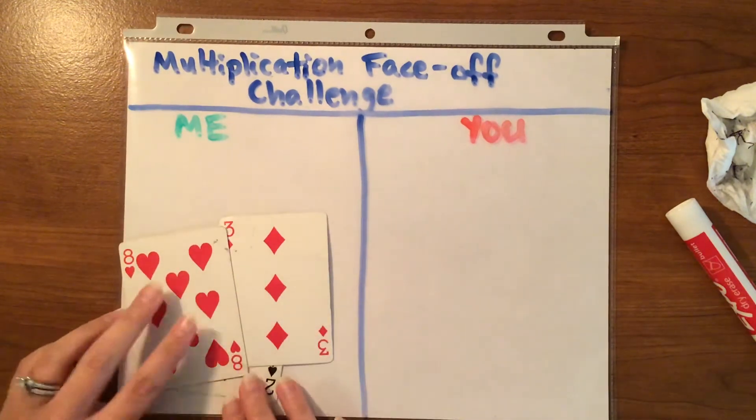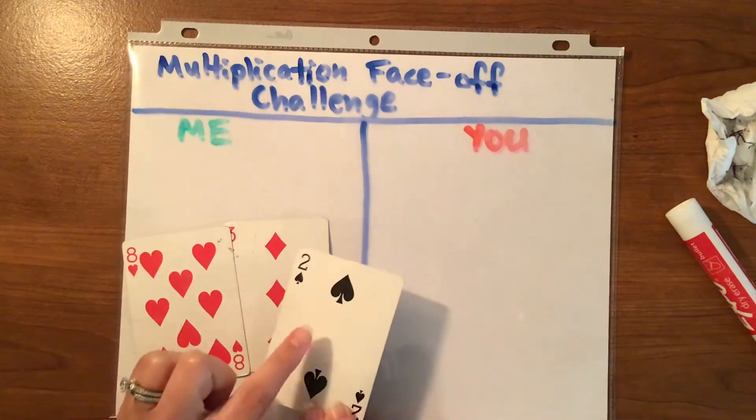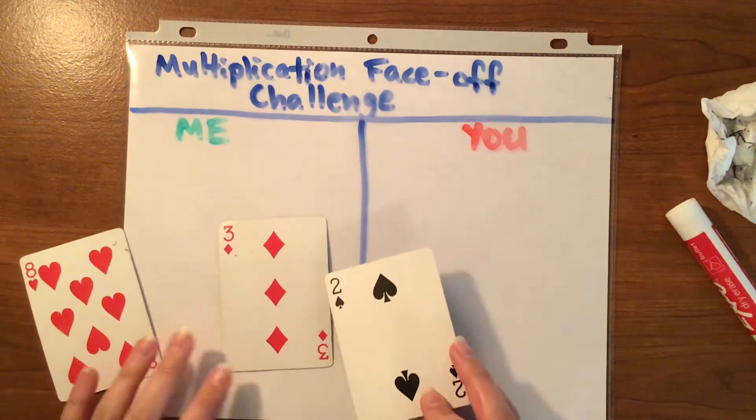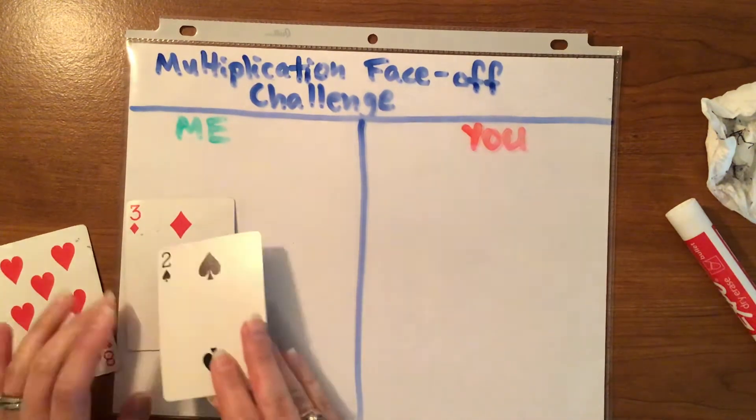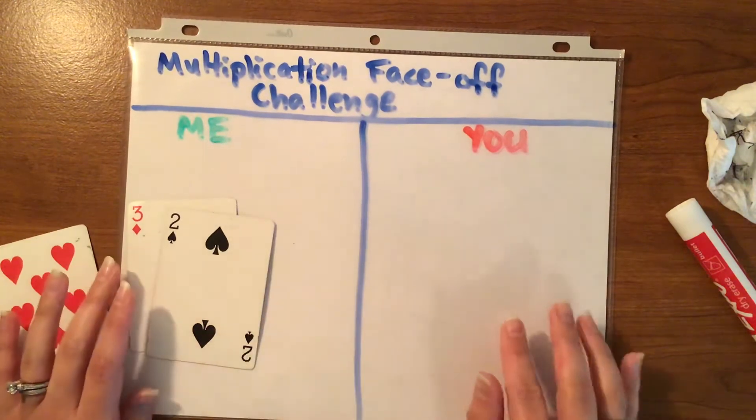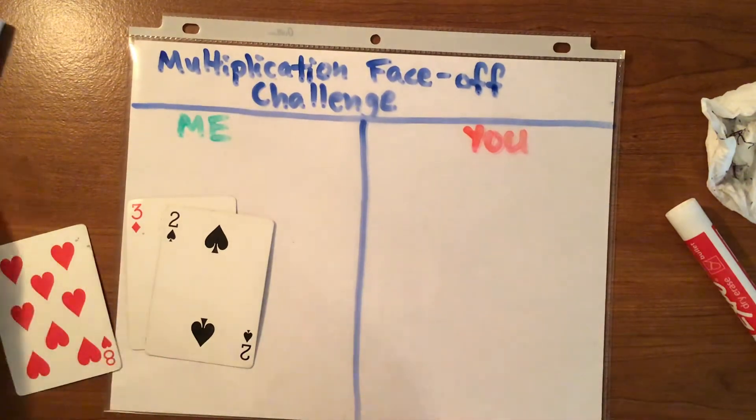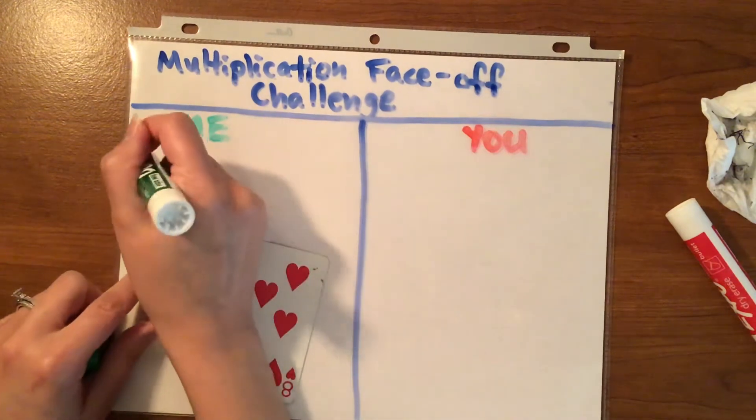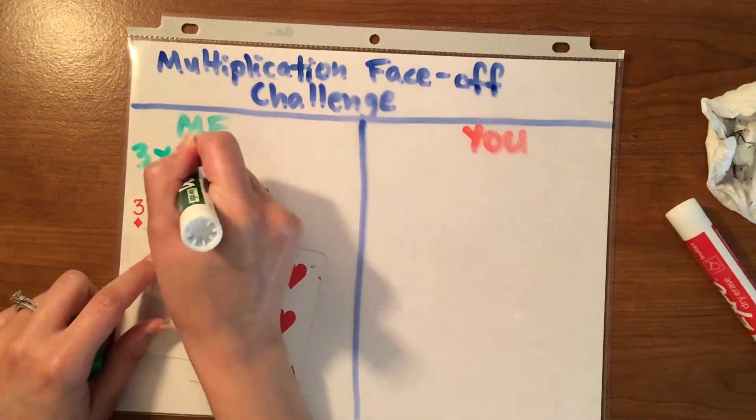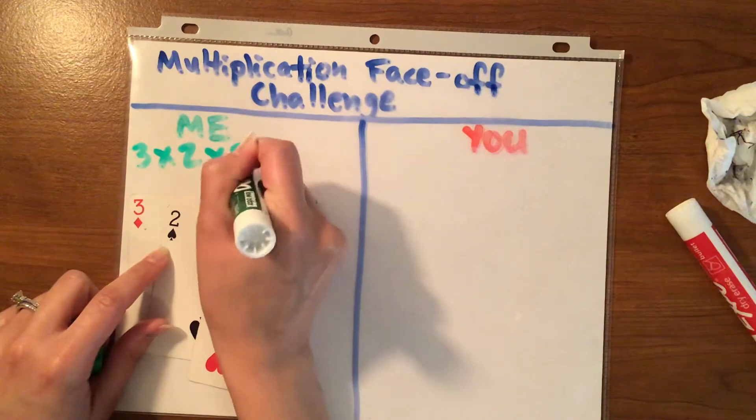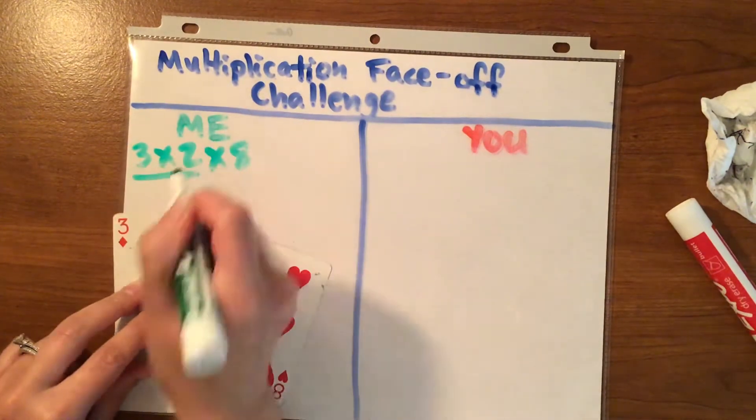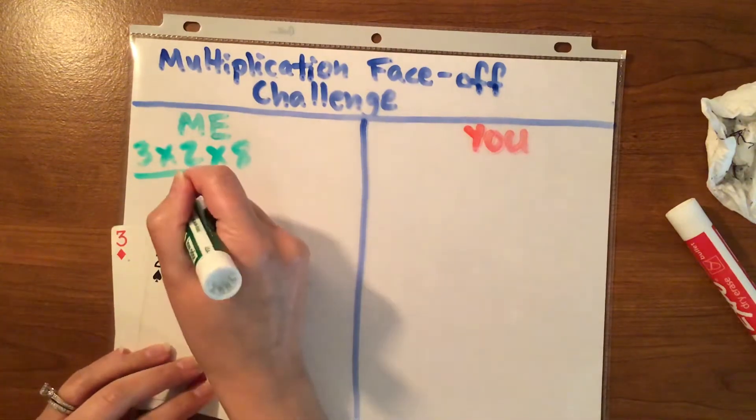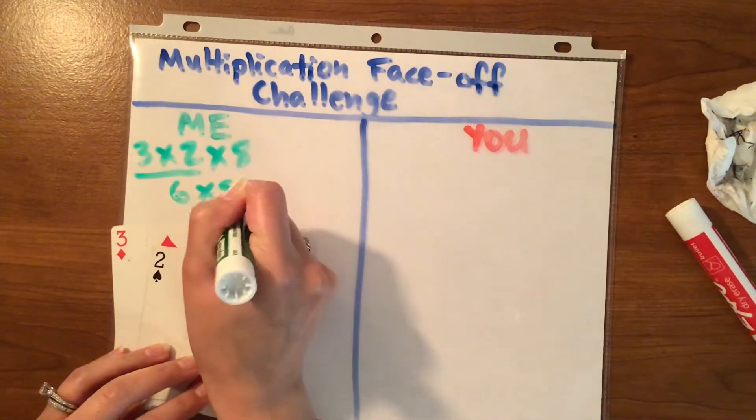Completely up to you on how you decide to do it. But do remember that we are multiplying, not adding. And that seems to be a common error. I'm going to multiply these two first. So three times two times eight. Three times two is like a double. You're like three plus three, which is six times eight. There's our six trick again.